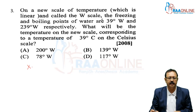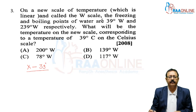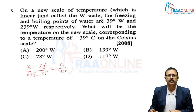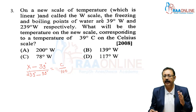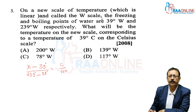We know that the ratio (unknown temperature − lowest fixed point) / (highest − lowest) is the same for any scale. For the W scale, the lowest is 39 and the range is 239 − 39 = 200. For Celsius, it is C / 100. This relation allows us to convert any temperature from the W scale to degrees Celsius.